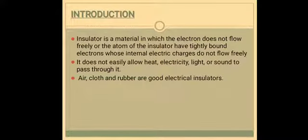So the introduction — first we will know what is an insulator. It is a material that does not conduct electrical current. The insulating materials include paper, plastic, rubber, glass and air. Even vacuum is also an insulator, but it is not actually a material. Most electrical conductors are covered by insulation, so it does not easily allow heat, electricity, light or sound to pass through it.